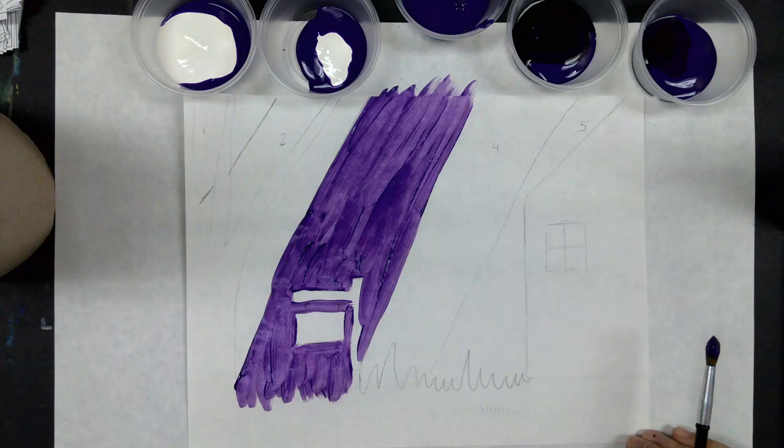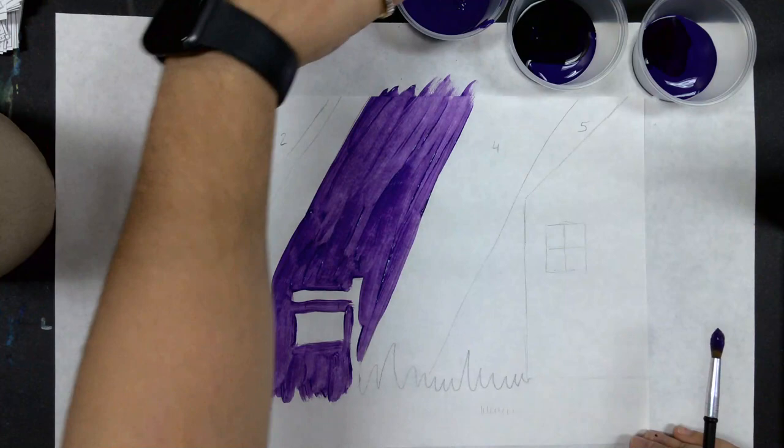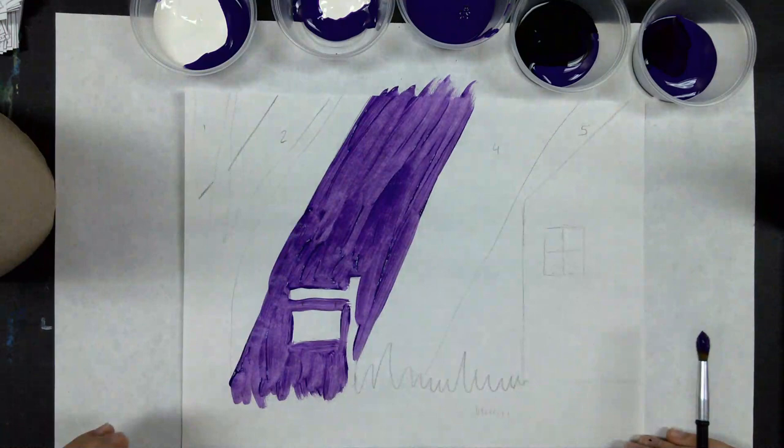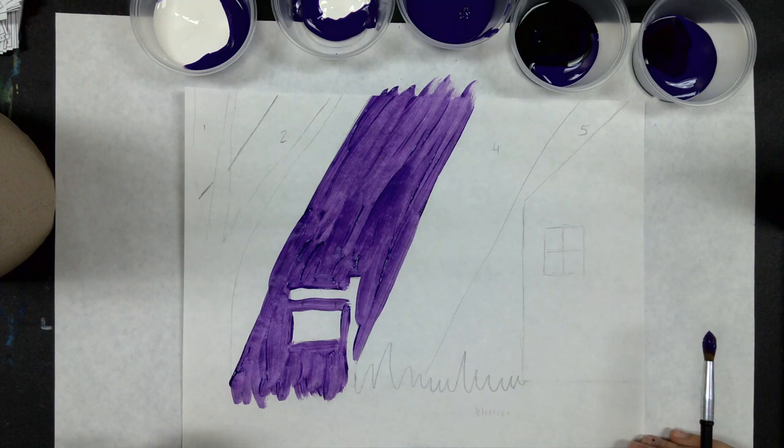Okay, the next thing we're going to do is we are going to start by adding what is called a tint. A tint is any color plus white.